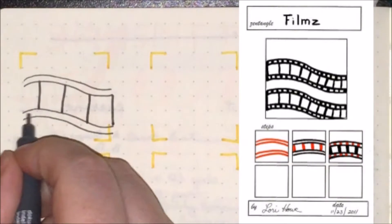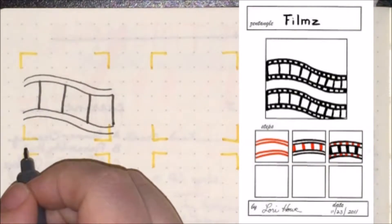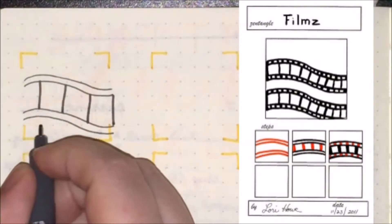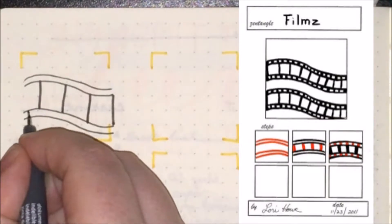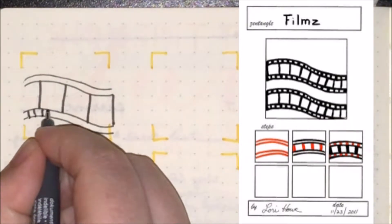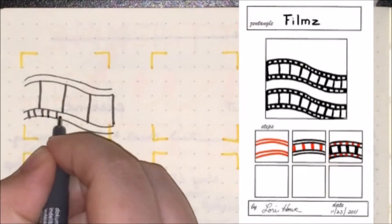And then finally, in between the closer pairs of lines, you want to do more lines that are much closer together.